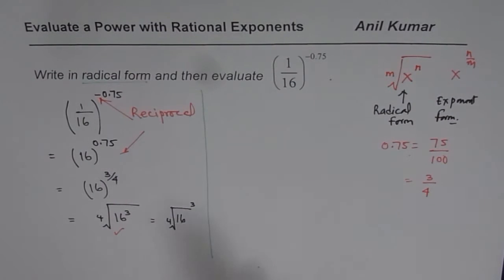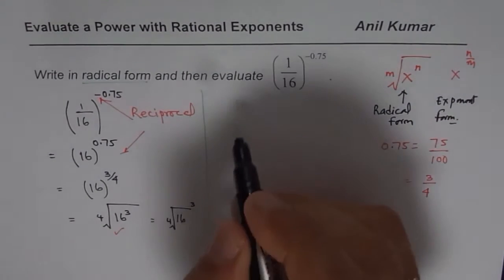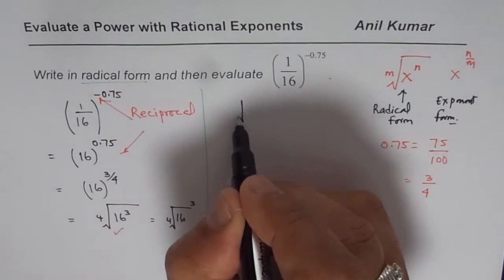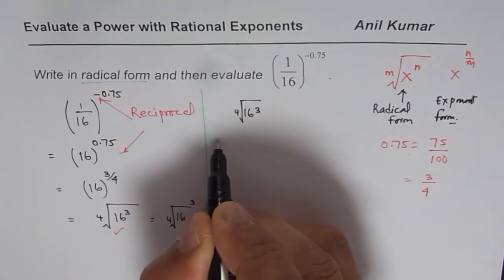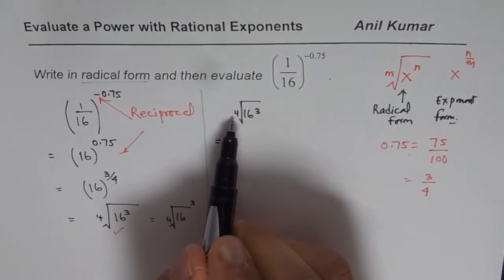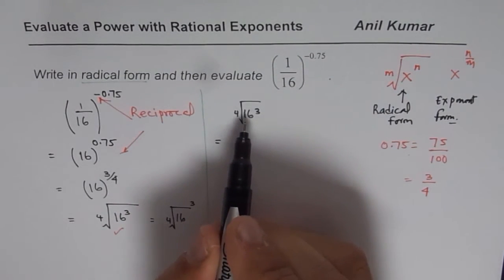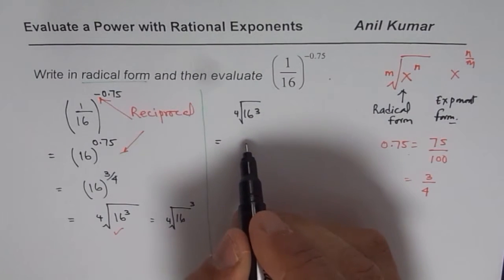Now, let us evaluate. To evaluate, I actually prefer this form. First, what we will do is, we have 4th root of 16 cube. Now, to evaluate, I will first do the 4th root, so that I am working with smaller numbers. That is to say,